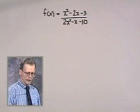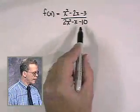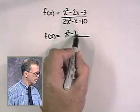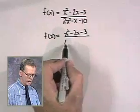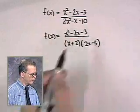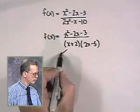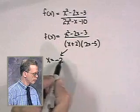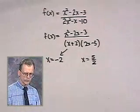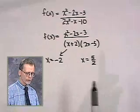Here we have f of x equals x squared minus 2x minus 3 divided by 2x squared minus x minus 10. We're going to factor the denominator to find out just when it becomes zero. The numerator x squared minus 2x minus 3 and the denominator will factor into x plus 2 and 2x minus 5. That will lead us to two equations of vertical asymptotes: x equals negative 2 or x equals 5 halves. The graph of f of x may never cross those two vertical lines.